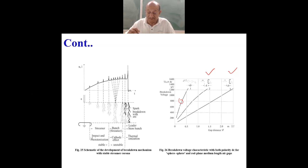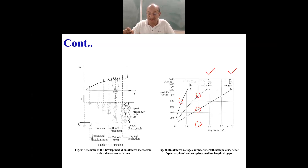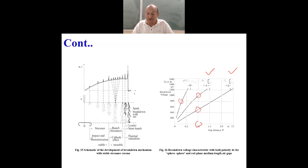For a gap distance of one meter, it is something like 500 kV, that means the average is 5 kV per centimeter. But in the case of negative polarity it is 1000 kV, that is 10 kV per centimeter - just double. This is an interesting finding: the breakdown strength for negative polarity is much higher than positive polarity. There is an effect in extremely non-uniform field configuration of the polarity of the voltage, the electrode shape, uniform field, weakly non-uniform field, and extremely non-uniform field.